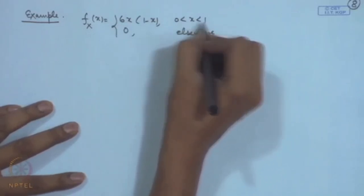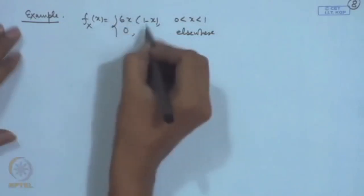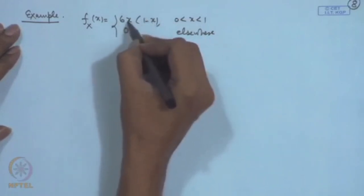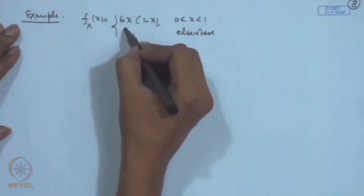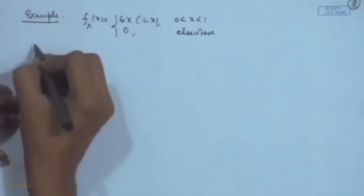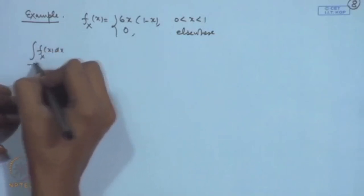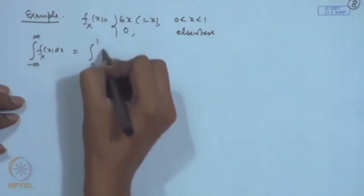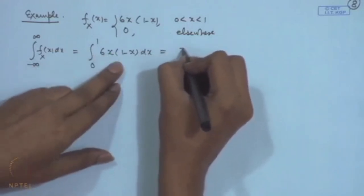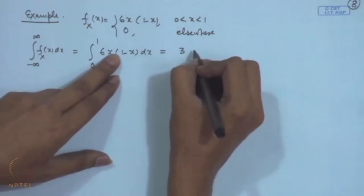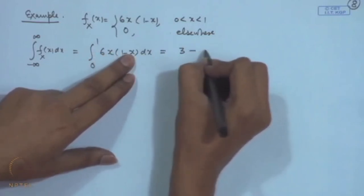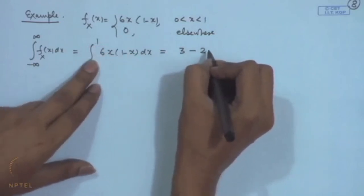For example, let f(x) = 6x(1−x) for 0 ≤ x ≤ 1, and 0 elsewhere. Since 6x(1−x) ≥ 0 for x ∈ [0,1] and 0 outside, the non-negativity condition is satisfied. The integral from 0 to 1 of 6x(1−x) dx = [3x² − 2x³] from 0 to 1 = 3 − 2 = 1. So this is a valid probability density function. P(0 < X < 1/2) = ∫₀^(1/2) 6x(1−x) dx = [3x² − 2x³]₀^(1/2) = 3/4 − 1/4 = 1/2.